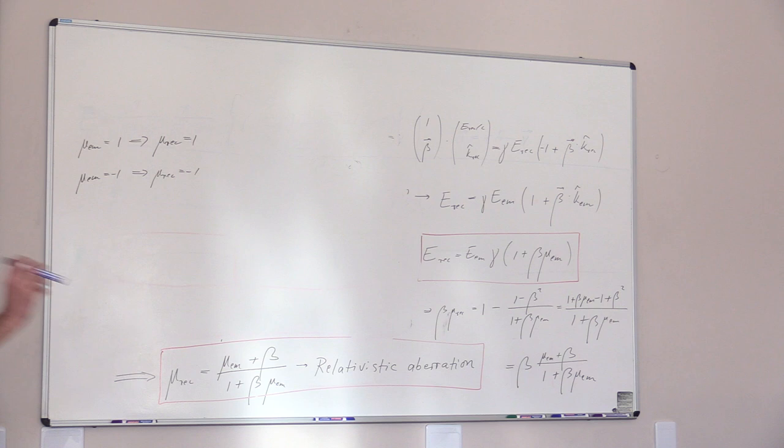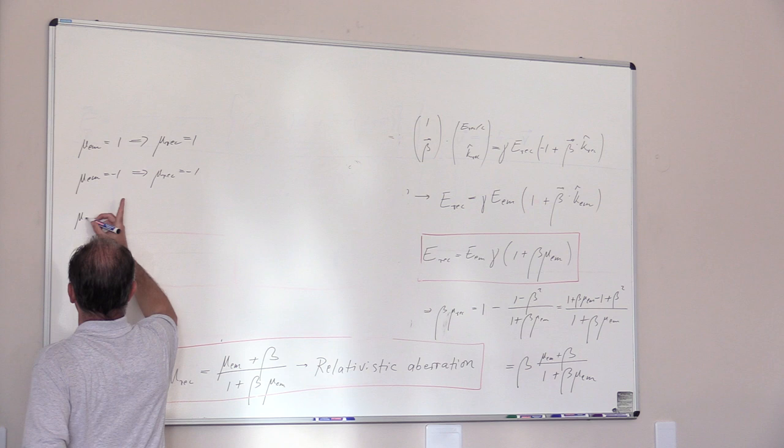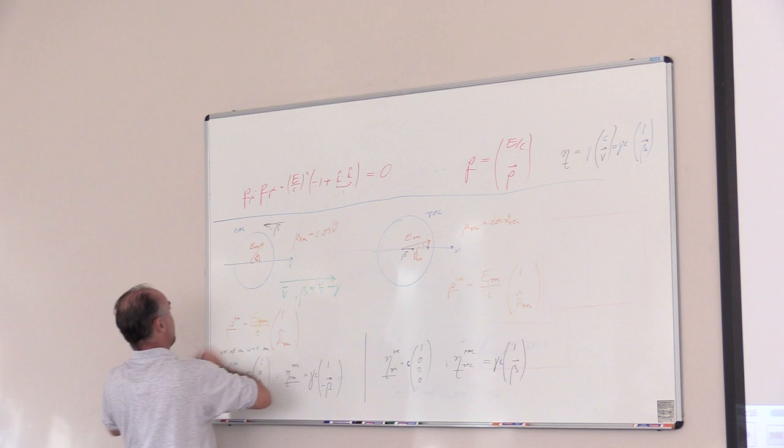In the same sense, if you go in the backward direction, you also see that it goes back. So you have minus 1 plus β over 1 minus β, you get to minus 1. So forward stays forward, backward stays backward. But let's say μ emitter equals 0.